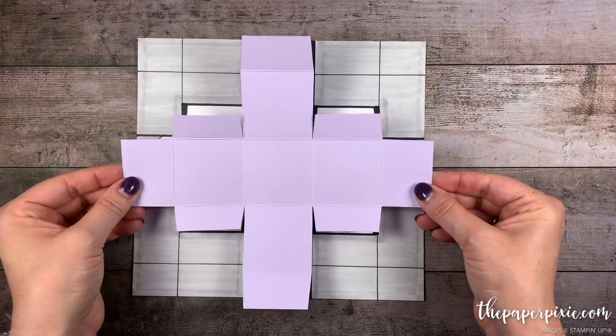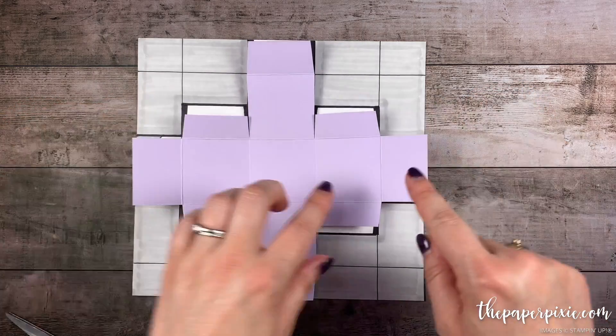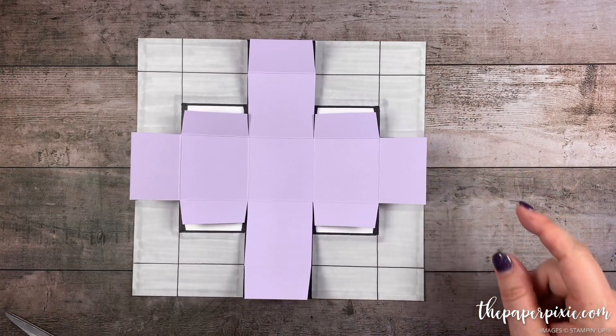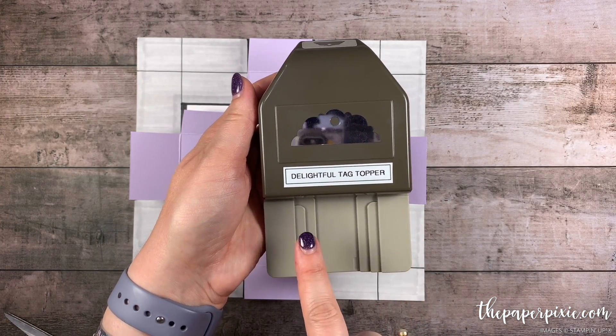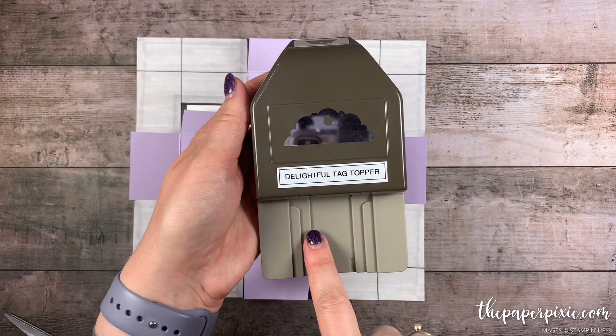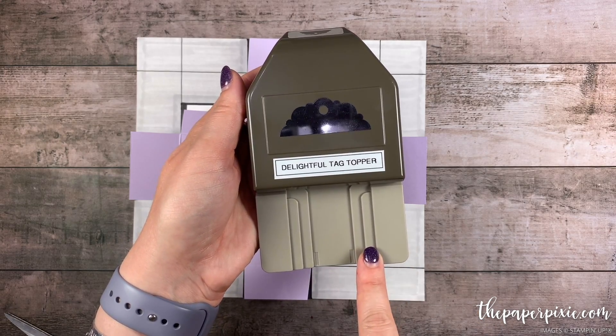Now all we have left to do is to go ahead and punch these 2 sections. Again these are the 1 3 8 inch sections with the delightful tag topper punch. What I love about this punch is you can do tags that are 2 inches, 1 and a half inches, or 1 inch. That's what these guides are sized for.